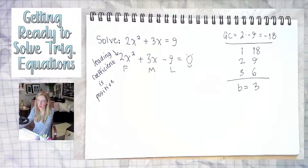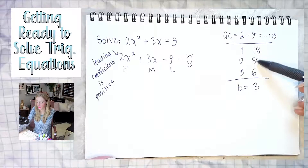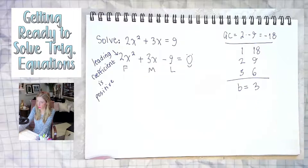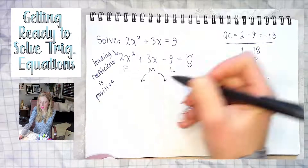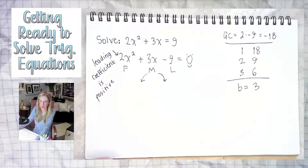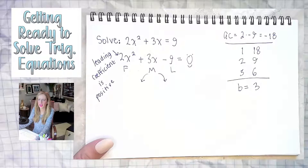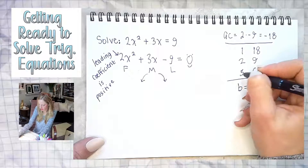Which pair of factors can I use to split up my middle term? They need to multiply to give me negative 18 — so one has to be positive and one has to be negative — but they need to add to give me positive 3, which means the bigger absolute value has to be positive. Go ahead Mason, what can we use? Negative 3 and positive 6.